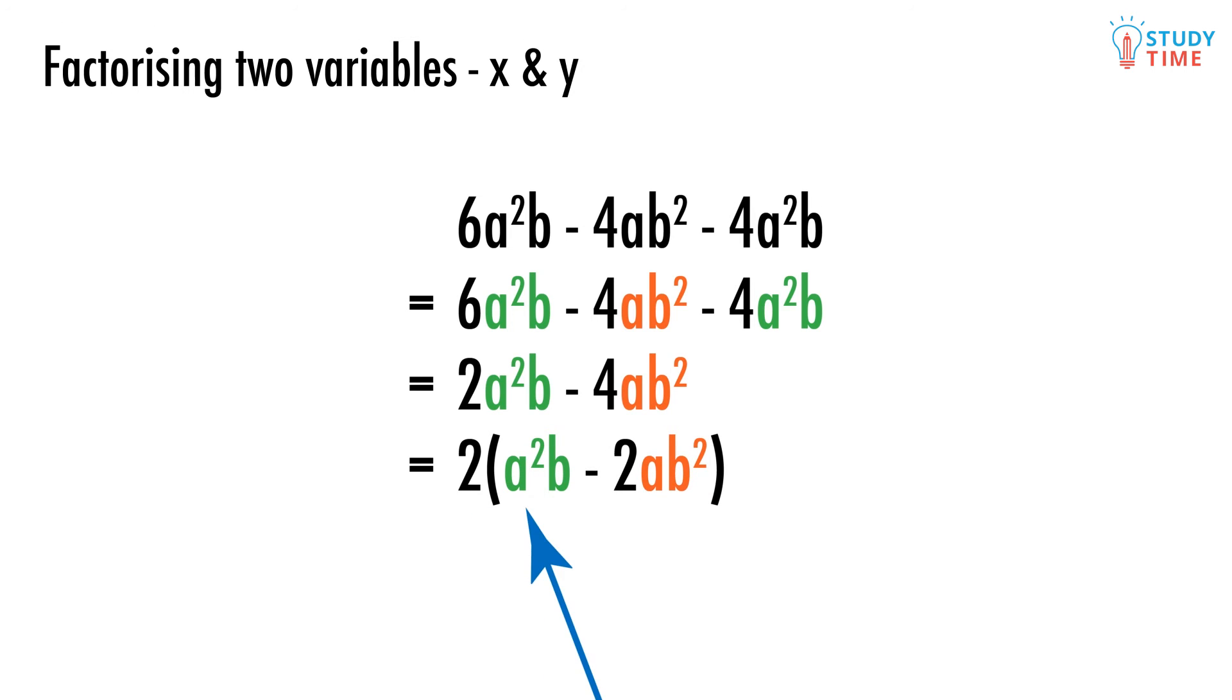Now we can spot a common factor. 2 is obviously a common factor - here it's 2 times one apple, here it's 2 times two oranges. But both of these terms also have a common factor of a and a common factor of b, so let's pop those outside the brackets as well and divide each term by them. Check for yourself that if we multiply each term inside the brackets by 2ab, everything goes back to how it was.